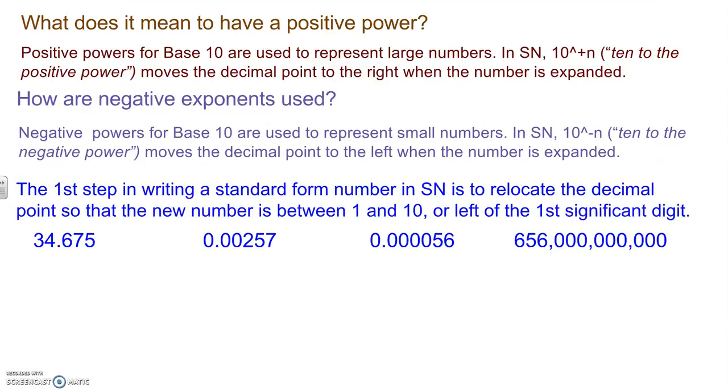So let's look at a few examples where we would write. First we start with our standard form number. The first step that you're going to do in each one of these is move the decimal place so that it is to the right of the first significant digit. Since we are an IB school, we want to make sure that we round to three significant figures. Oops, there's a mistake here.